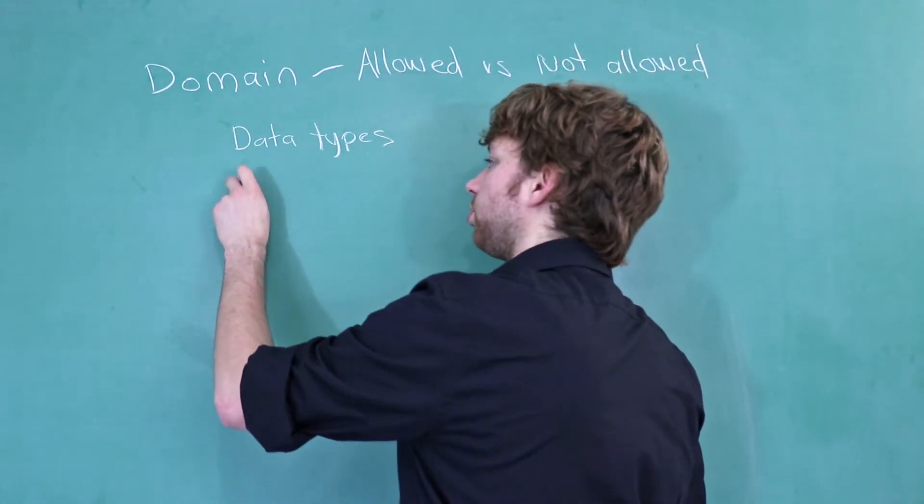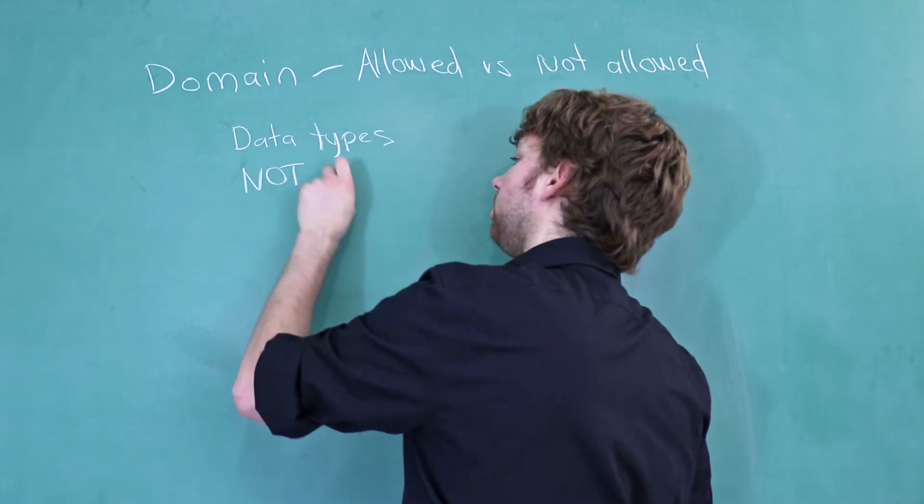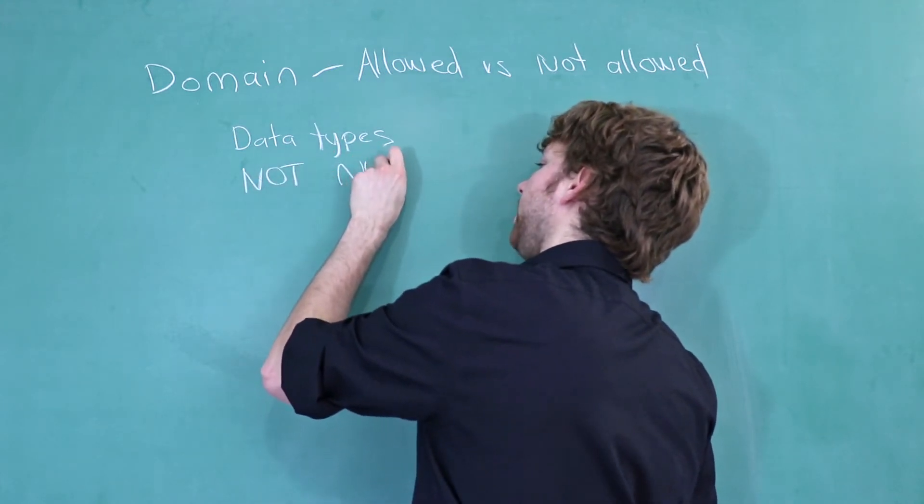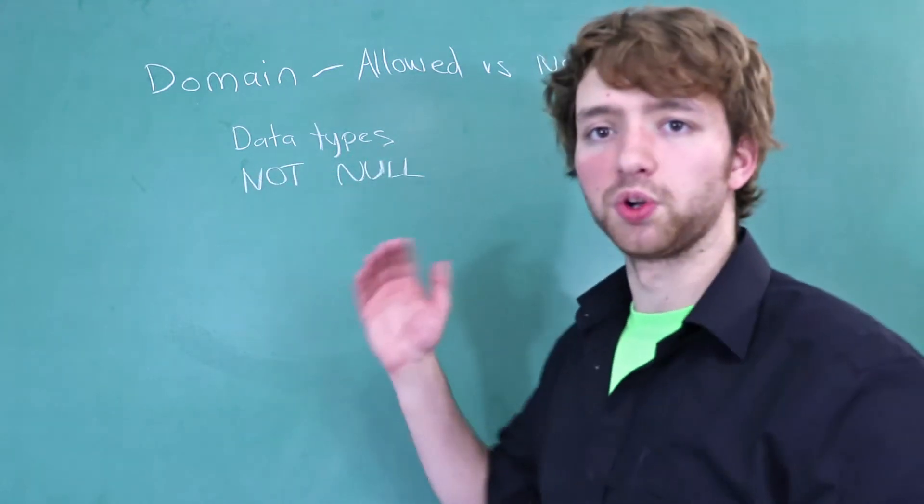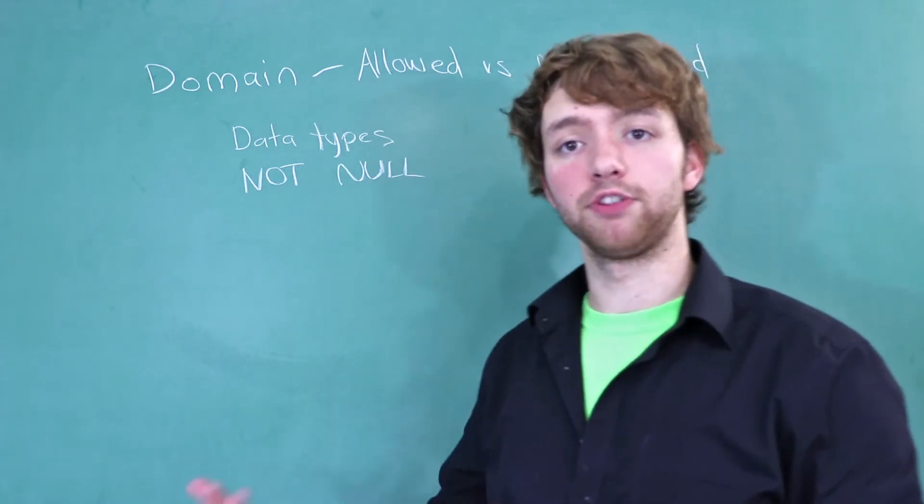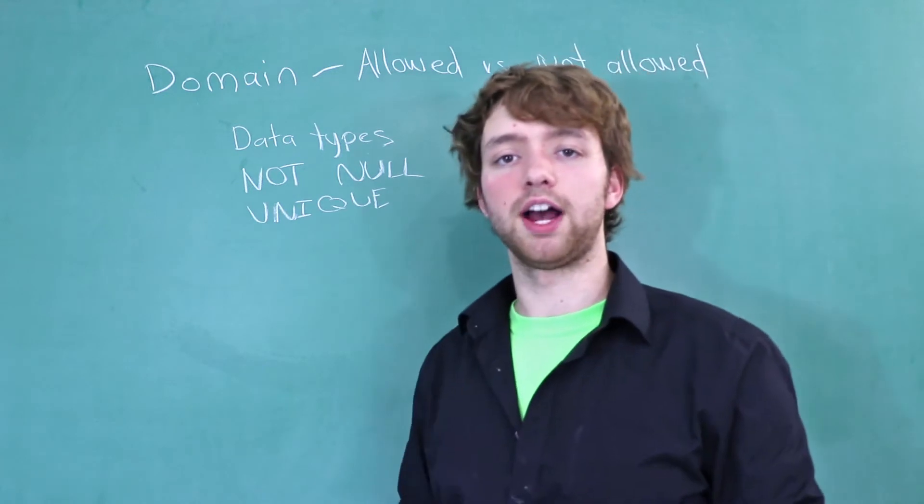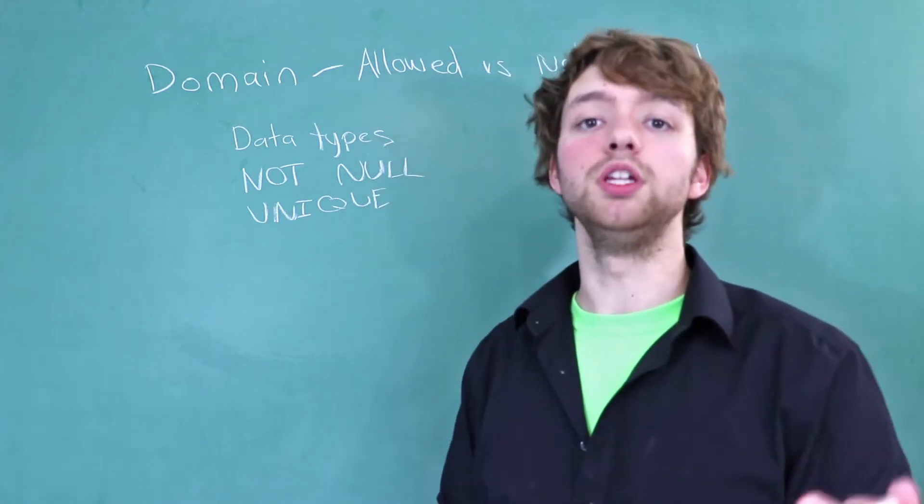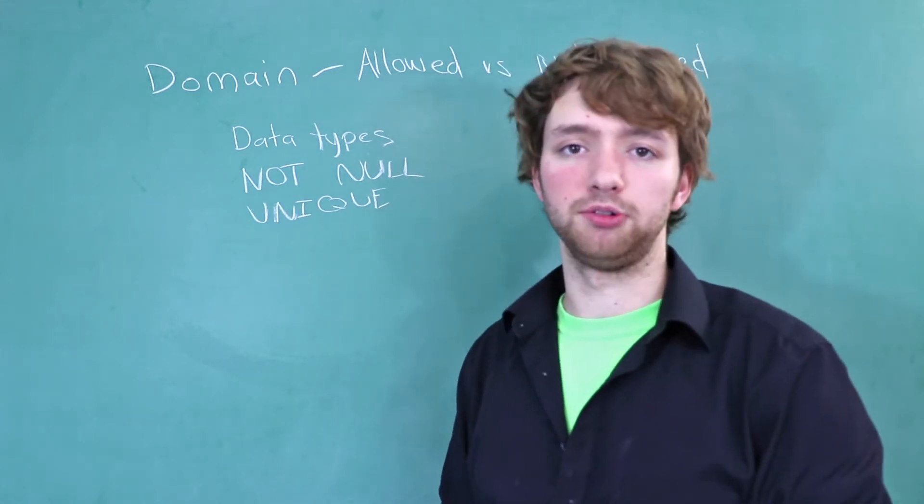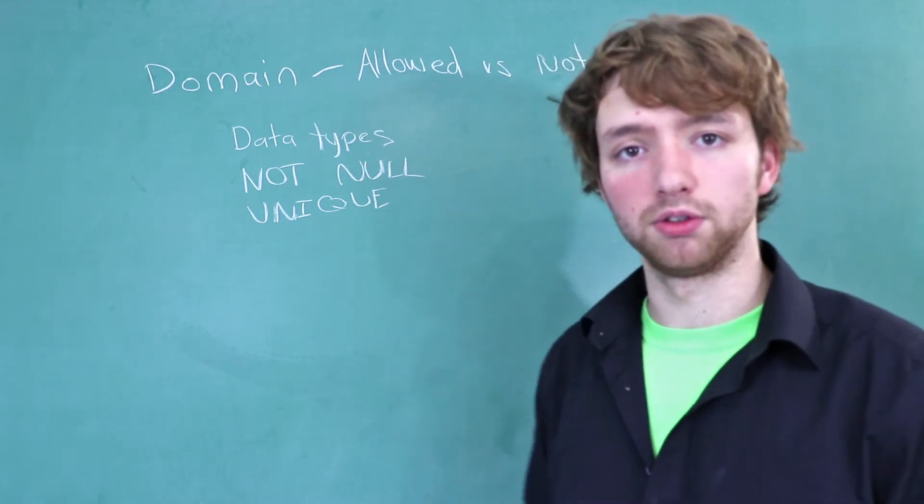The other way are some general rules. You could use NOT NULL. This is an example of a constraint that would basically force every single row to have a value for that column. You could use UNIQUE. That's going to force every single value for that column to be unique. Meaning once a value is used, another row cannot use that value.